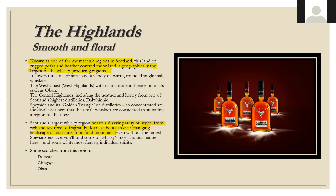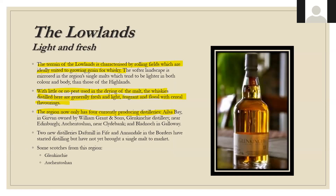Even without Speyside's fame, some of the most famous names are in the Highlands, including Dalmour, Glengoyne, and Oban. The Lowlands feature a lighter style — the oiliness characteristic of a Lowlands Scotch can be quite distinctive. The terrain is characterized by rolling fields suited for growing grain, and the softer landscape is mirrored in the single malts, which tend to be lighter in both color and body. Little or no peat is used; the whiskeys are generally fresh, light, fragrant, and floral with more cereal flavors. The region currently has only four producing distilleries: Auchentoshan near Clydebank, Glenkinchie near Edinburgh, Bladnoch in Galloway, and Ailsa Bay.